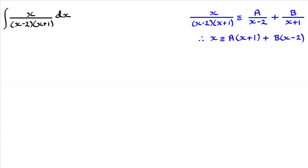So if you were to do that, what you end up with is x on the left is identical to A(x+1) + B(x-2). Okay, then we need to make one of these brackets equal to zero. It's the quickest way that we can find A and B.